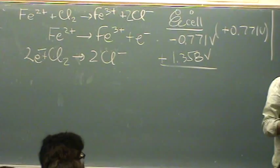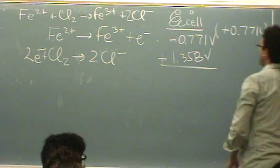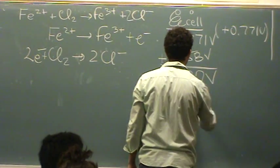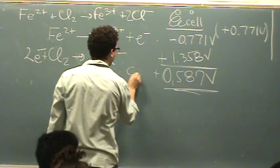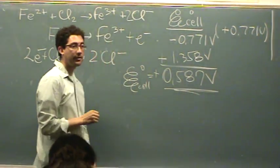And now I just straight add it. So that's going to turn out to be 0.587 volts. And this reaction, as is, is spontaneous because this is positive. And this is the overall E cell for this reaction.